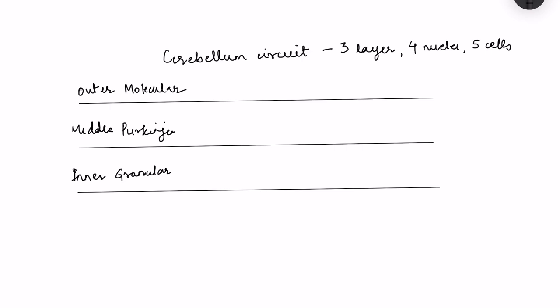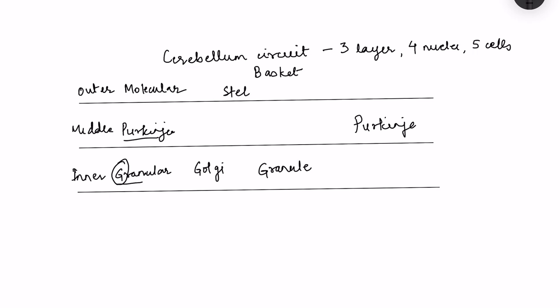To remember which cells are in each layer: the inner granular layer has cells starting with the letter G — granule cells and Golgi cells. The middle Purkinje layer, as the name suggests, has Purkinje cells. The outer molecular layer has basket cells and stellate cells.